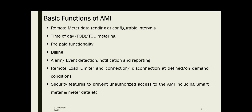Dynamic pricing can only be implemented if you have a smart meter system and advanced metering infrastructure. Other AMI functions include pre-paid functionality, where you can pay for your energy in advance, billing, alarm and event detection, notification and reporting. Any kind of contingency is notified to the consumer and utility. Also, remote load limiter and connection or disconnection at defined demand conditions, which relates to demand-side management and direct load control.